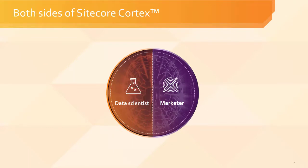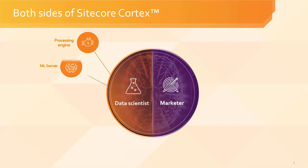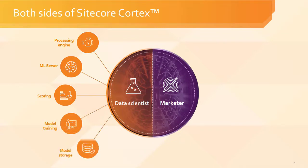Cortex has many capabilities for the data scientist, which is on the left side of the brain. Everything from a robust processing engine to a full machine learning server, scoring flexibility, as well as model training and model storage — all of the things that a modern data scientist needs to get started with machine learning.